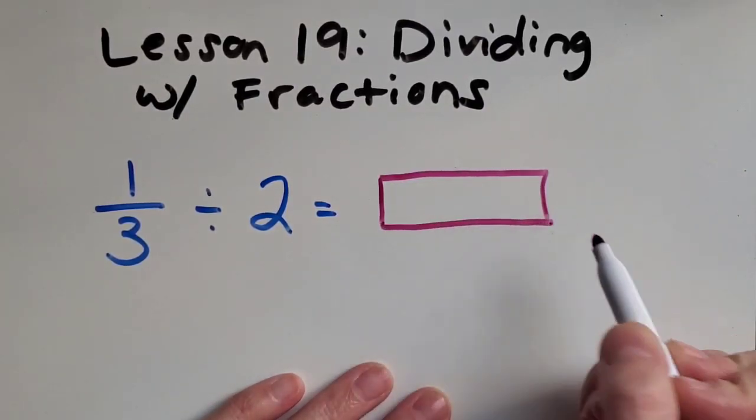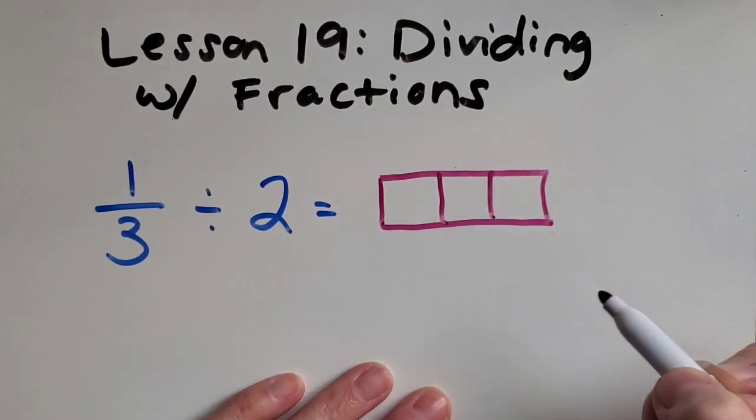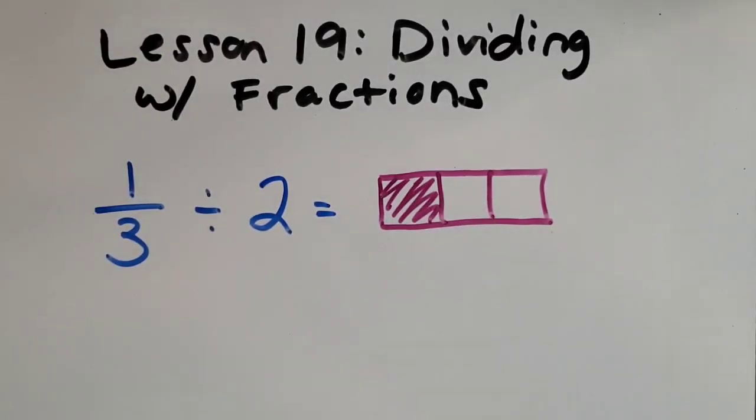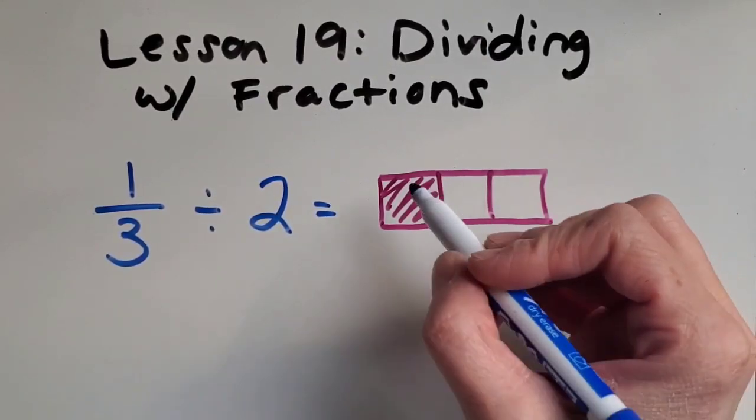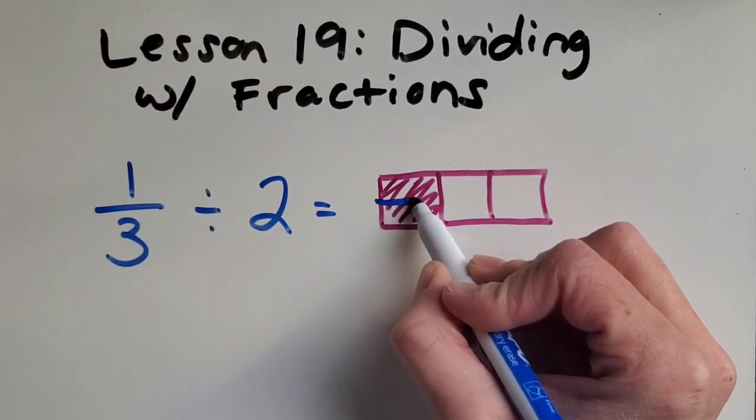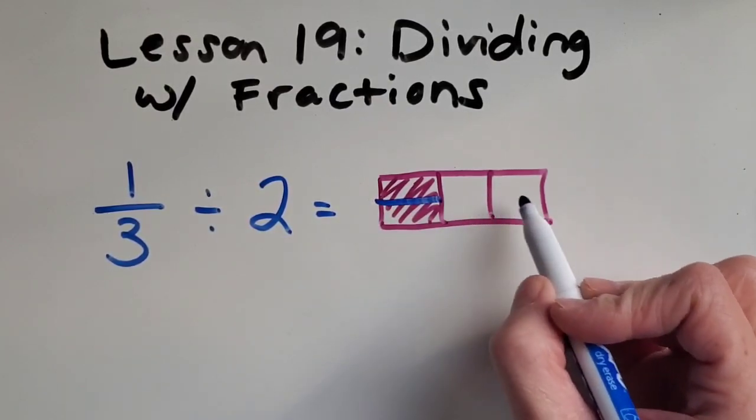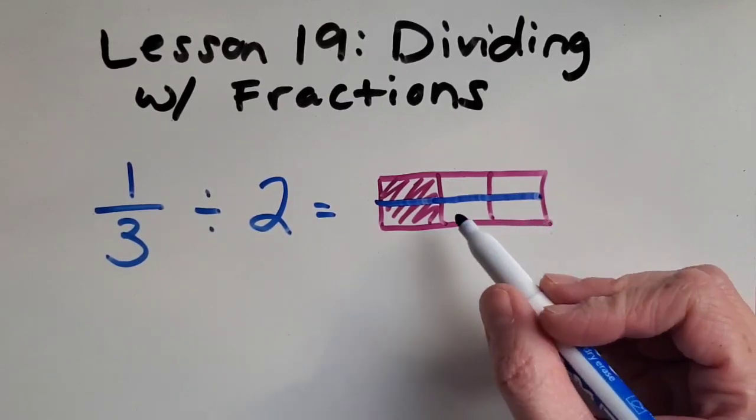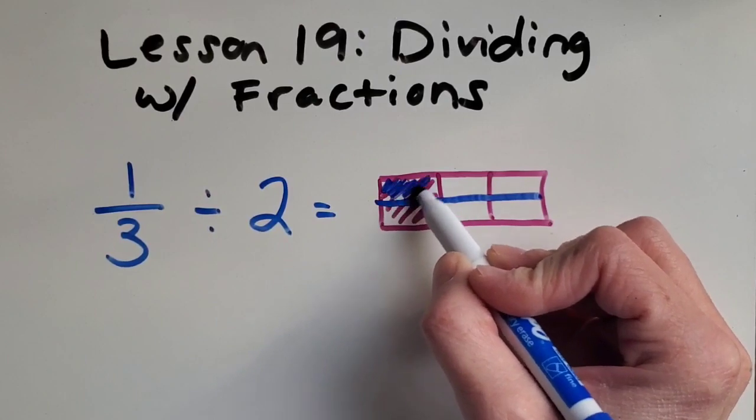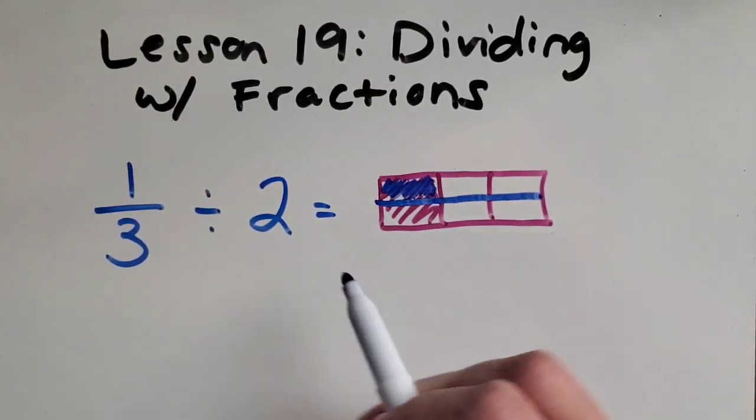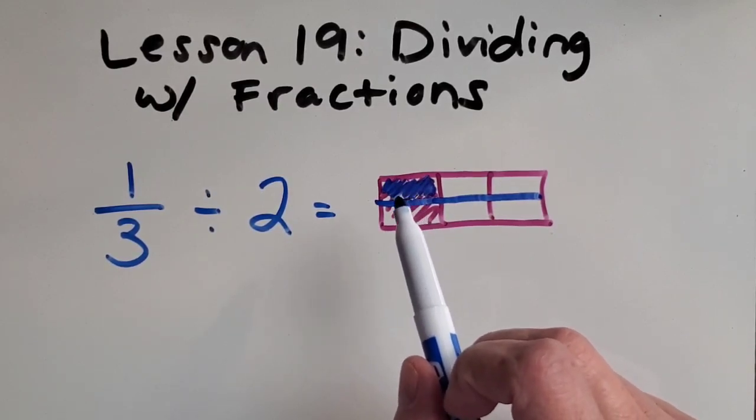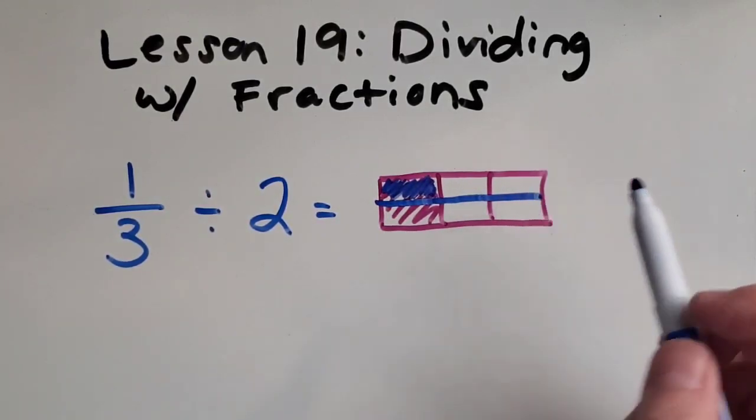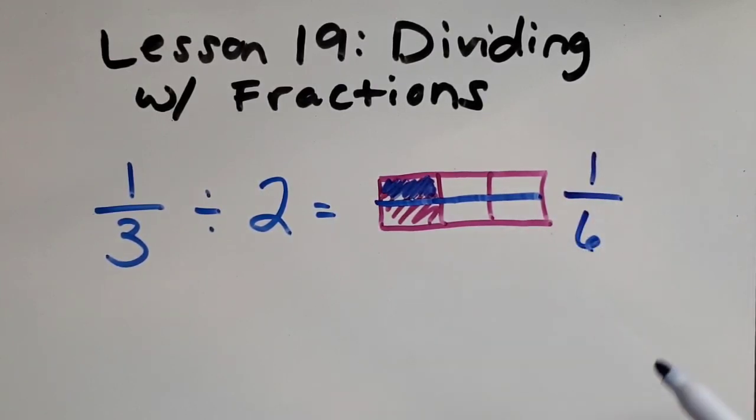We want to take the fraction one-third. I want to show you that we can also use fraction strips for these. Sometimes those are easier than drawing circles. I'm going to take one-third. Now we're going to split that third up into two pieces. If we do that, then we also want to split these other thirds that we didn't shade up into two pieces so they're all equal sizes. Now I'm going to shade in just one of the groups. When we're dividing, I always think about how we want to know what's in just one group. So I have 1 out of 1, 2, 3, 4, 5, 6, so the answer is one-sixth.